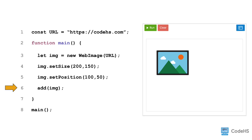Lastly, to add the image to the canvas, we will call the add function. It's also worth calling out that we stored the URL in a constant variable on line one, so that we can use it when we create the WebImage on line three.